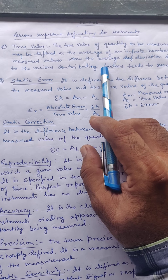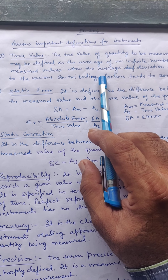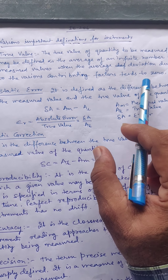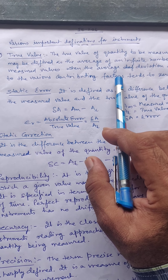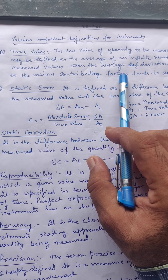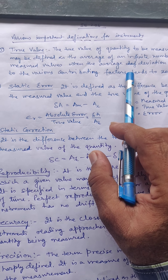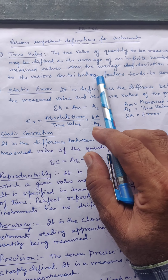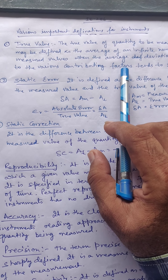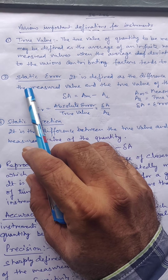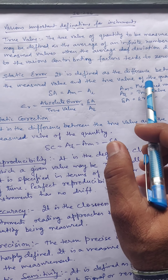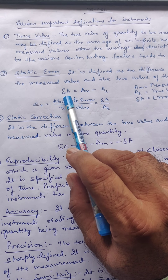The true value is obtained when the infinite number of measurements are taken and the factors that change the value tend to zero. The error is defined as the difference between the measured value and the true value.